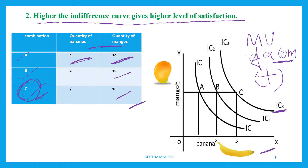In the diagram, on the OX-axis banana is measured and on the OY-axis mangoes are measured. The mangoes remain constant at ten, but the number of bananas keeps increasing. Combination C gives a higher level of satisfaction than combination B, and combination B gives a higher level of satisfaction than combination A. This means: higher the indifference curve, higher will be the level of satisfaction; lower the indifference curve, lower will be the level of satisfaction.